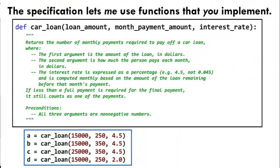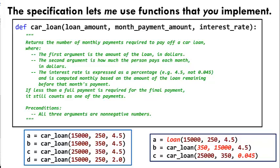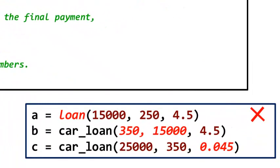The specification makes sure that I don't make mistakes like using the wrong name for the function, or putting the arguments that I send in the wrong order, or expressing interest rate as a fraction instead of a percentage, or assuming that your function calculates interest continuously rather than monthly.